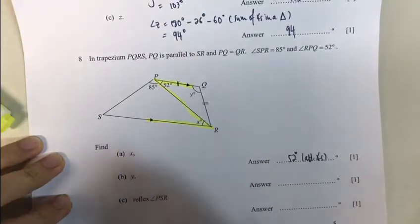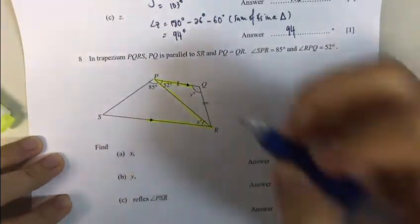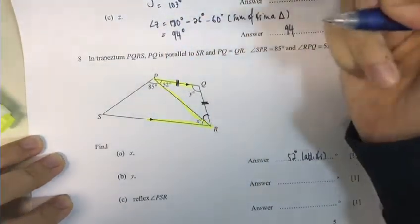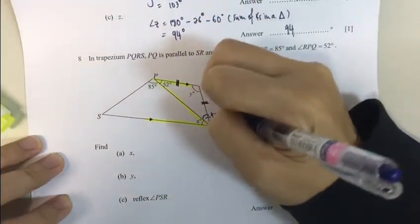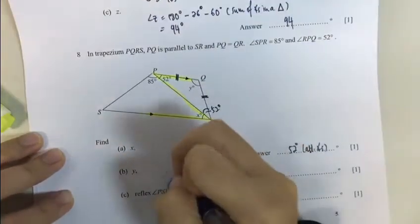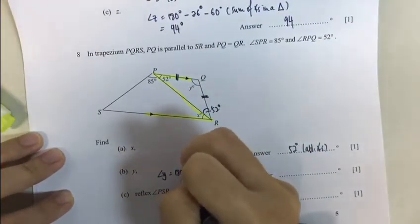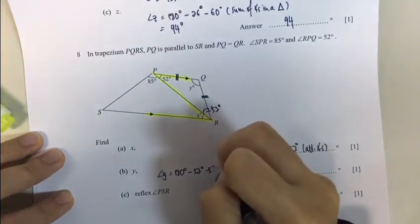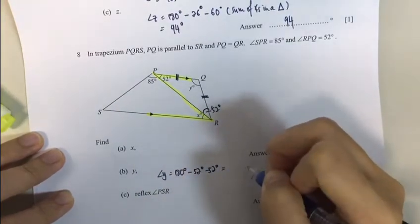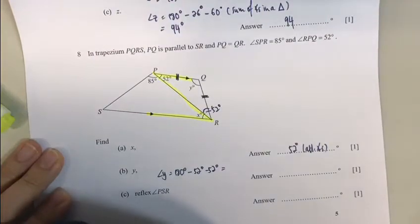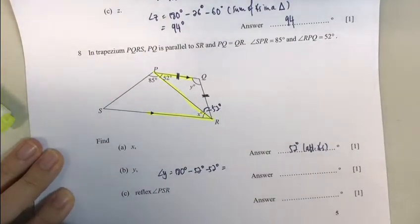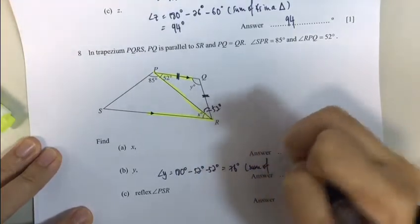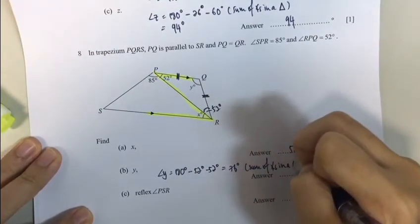Angle Y. Angle Y is part of N. What does this tell me? It's an isosceles triangle, that's right. So angle Y: 180 take away 52 take away 52. That would give me 76. Sum of angles in a triangle.